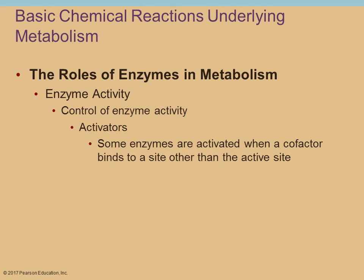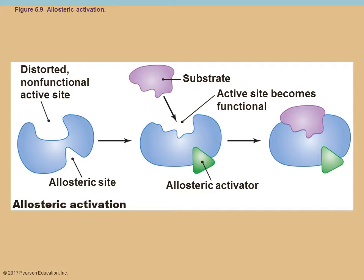How do you control enzyme activity? Some enzymes are going to be active all the time, but most can be turned on and off — it's a way the cell regulates and avoids wasting energy. Why turn on an enzyme if there's no substrate? You have activators: some enzymes become activated when a cofactor binds at an allosteric site — usually a site other than the active site. When that cofactor binds, there's a shape change that puts the active site in the proper shape so the substrate can bind and the reaction can occur.